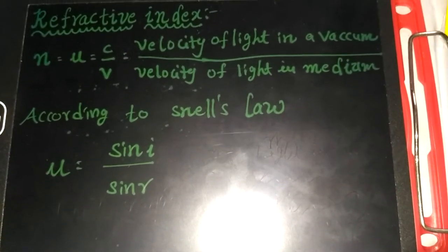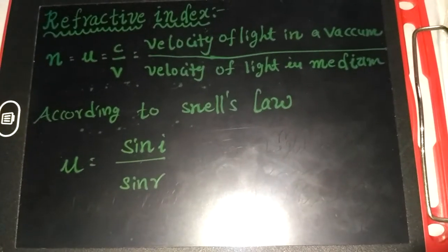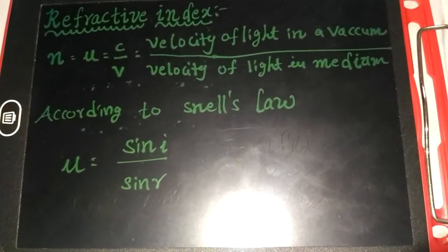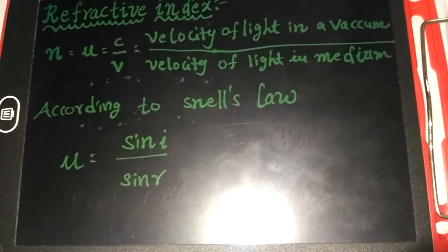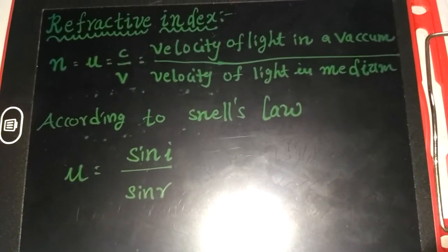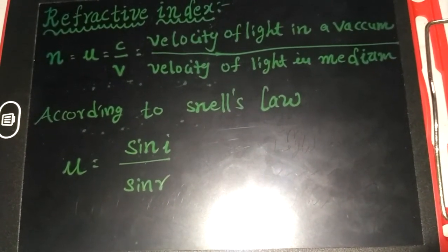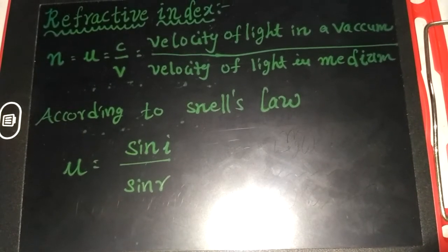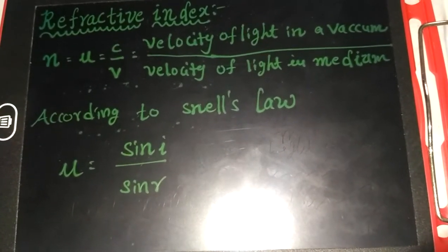One more definition is also there that was given by Snell. The refractive index can be defined as the sine of angle of incidence and sine of angle of refraction. Therefore, mu equals to sine i by sine r.